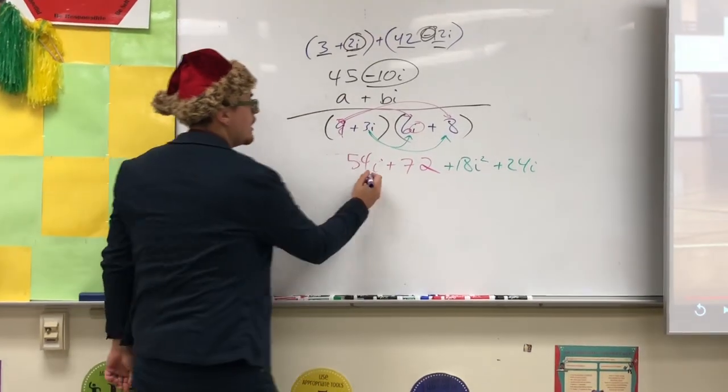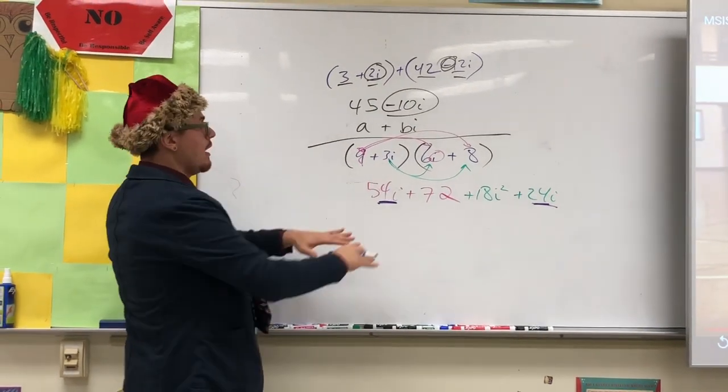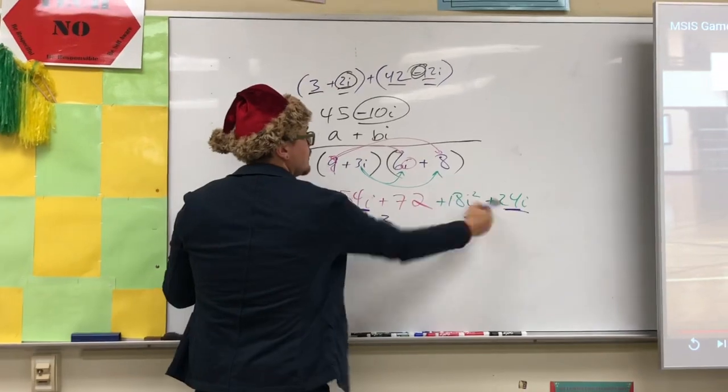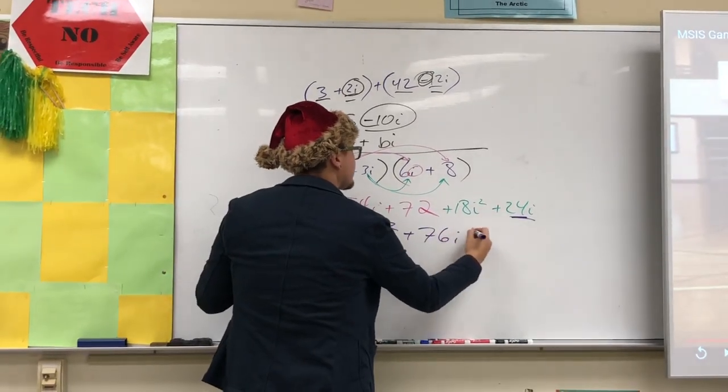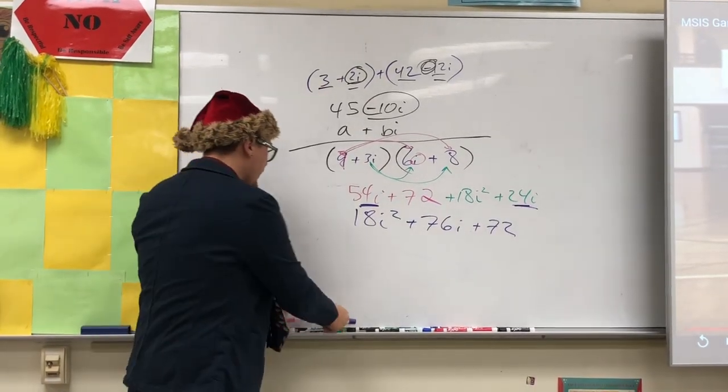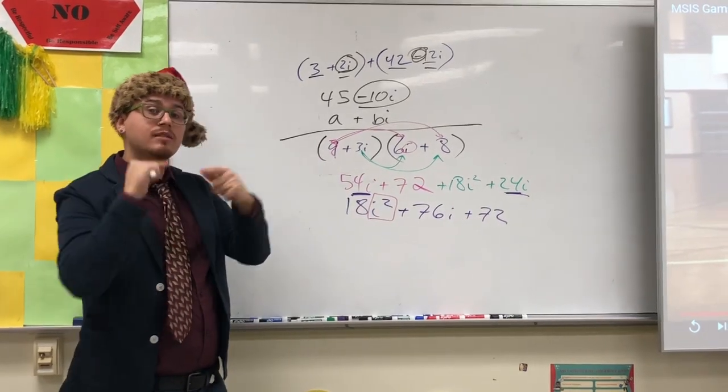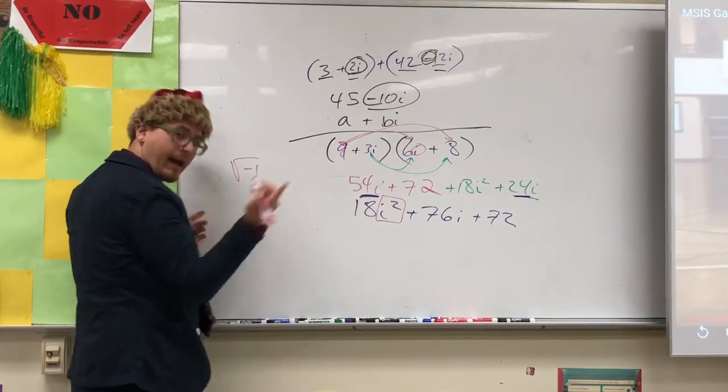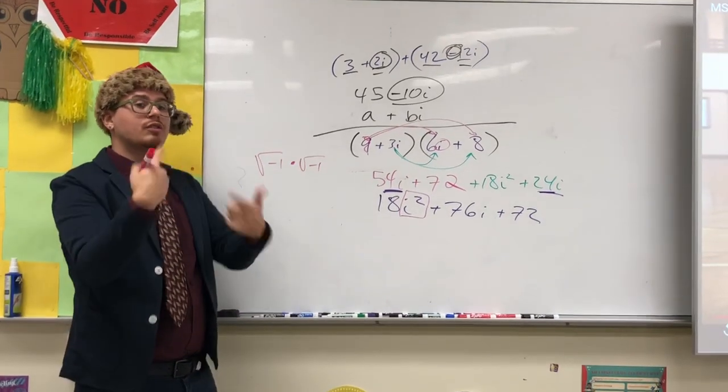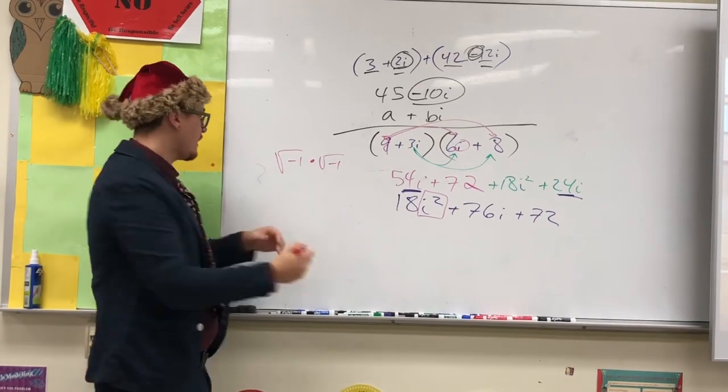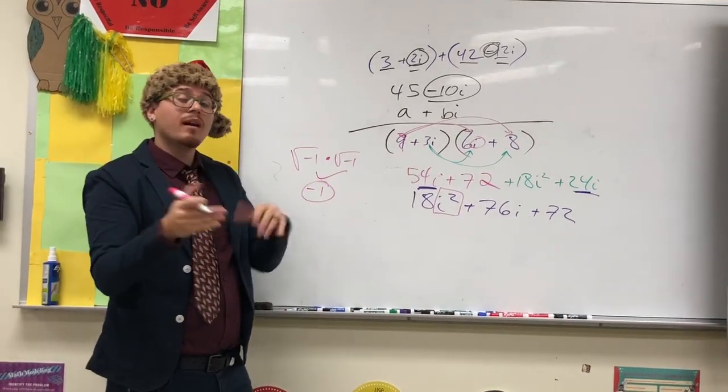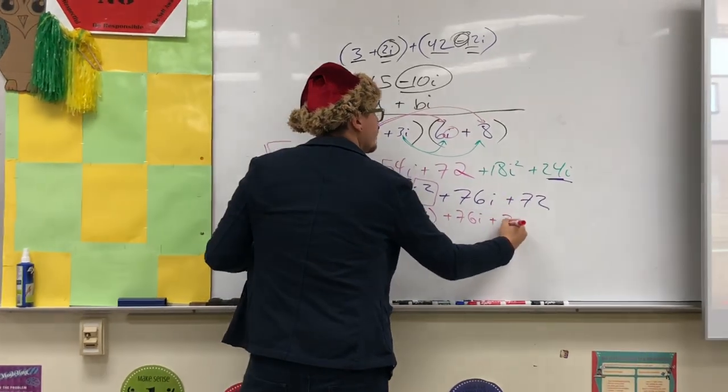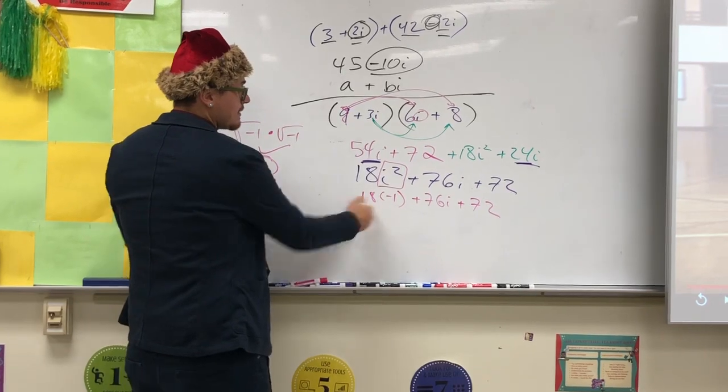So before I convert my i squared into something I can use, I want to combine my like terms. CLT, cucumber, lettuce, tomato, sandwich. And we are going to combine our i's because those are just i terms. I always rewrite things in order of magnitude, the degree of the exponent. So I'm going to go 18i squared. That looks like 76i plus 72. You're just about done. But i squared is not something that is acceptable in our final answer. So what we need to do is convert that. Now i squared is basically the square root of negative 1, i, that's i, times the square root of negative 1. You should know that if you multiply something that's the square root by itself, you get that thing. So this becomes negative 1. So i squared converts to negative 1.